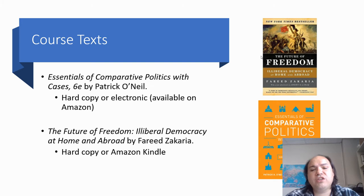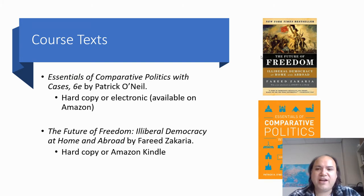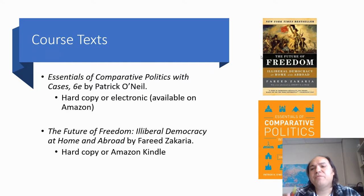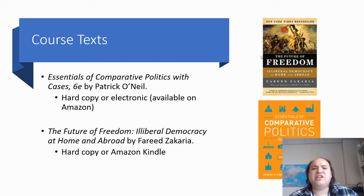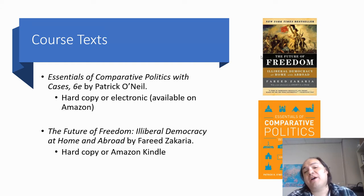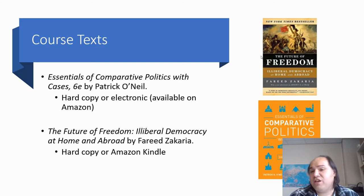You also want to get The Future of Freedom: Illiberal Democracy at Home and Abroad by Fareed Zakaria. If you recognize his name, he's on CNN all the time — he's a brilliant guy. This book is a New York Times bestseller and gives us a nice overview and criticism of what's happening in the realm of comparative politics. It comes highly recommended by other teachers. Get it in hard copy or Kindle, whatever you want — get it quickly.